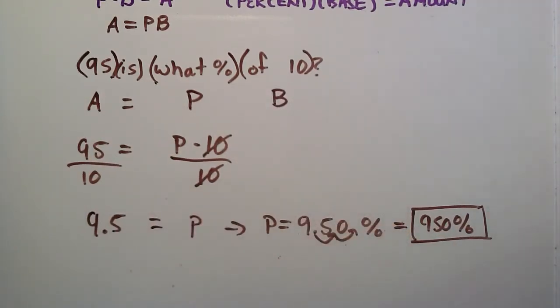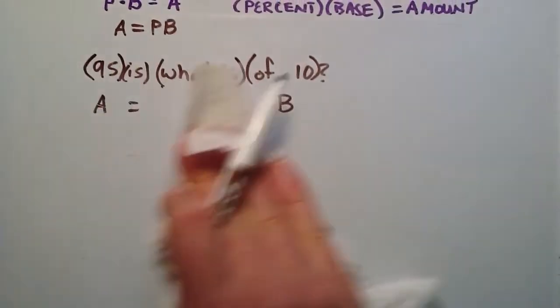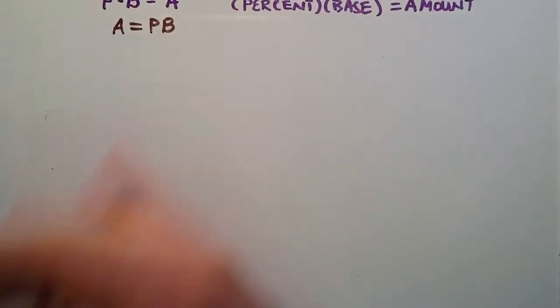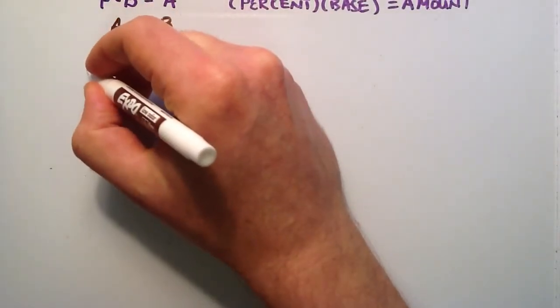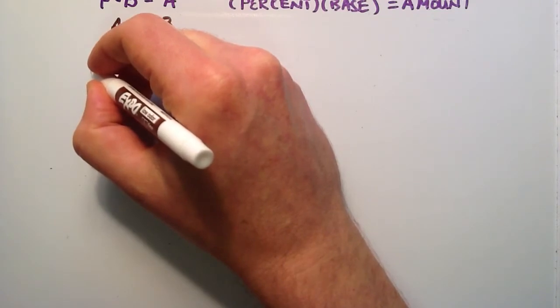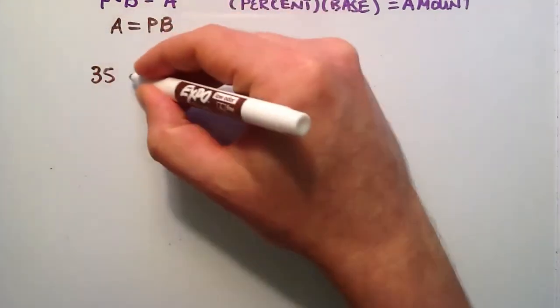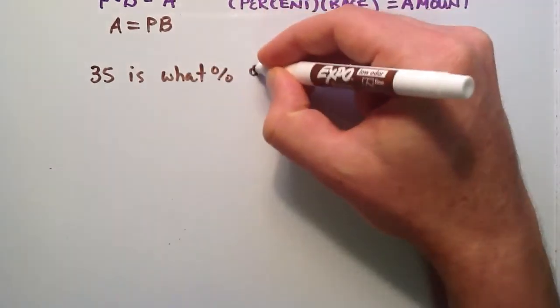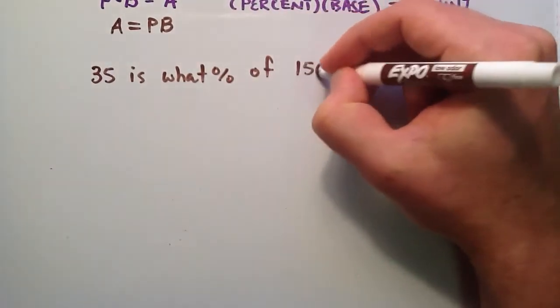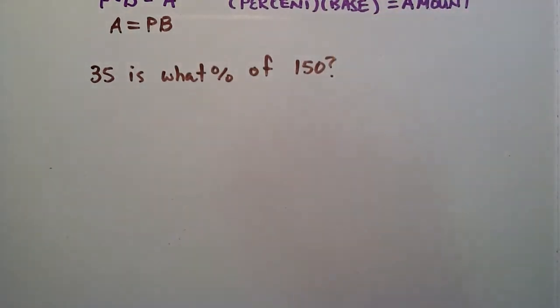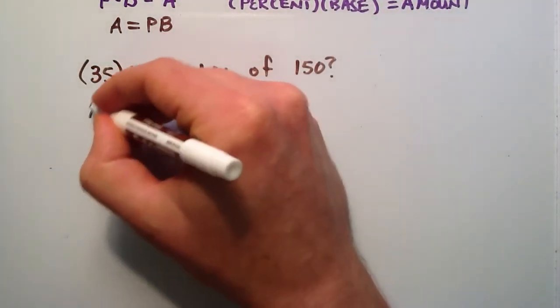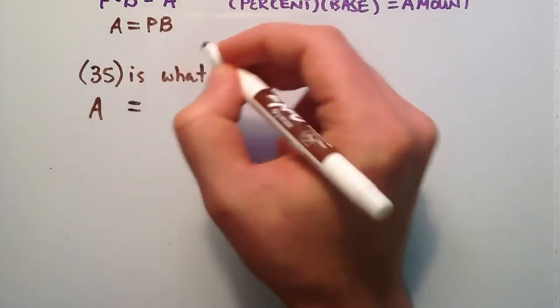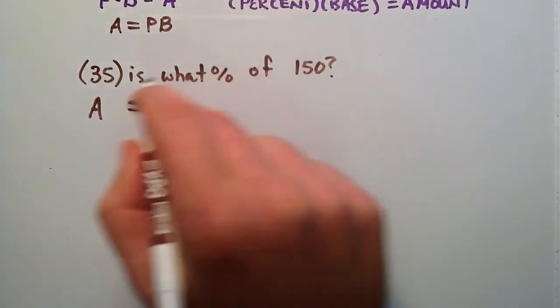Let's go ahead and do another example now. The next question is worded the same way. Anytime they're worded this way you can do what I just did. This time we're going to say 35 is what percent of 150? Once again this is our A. 35 is our amount. We're asking what percent of 150 equals A.